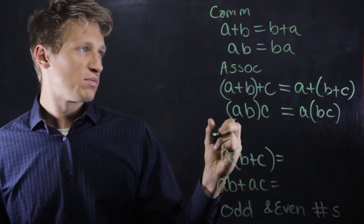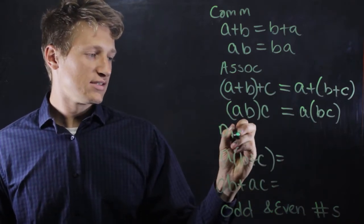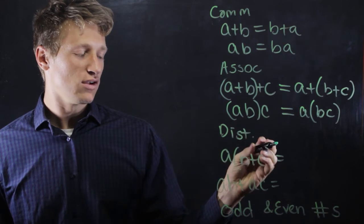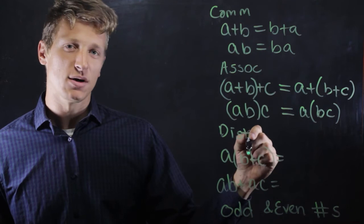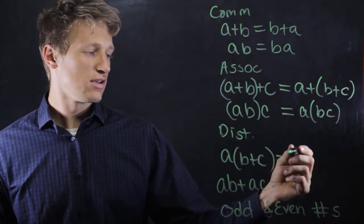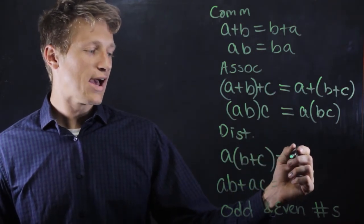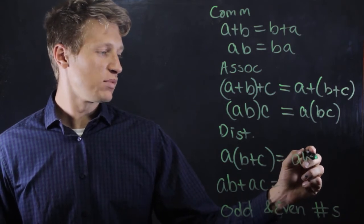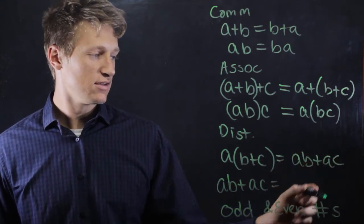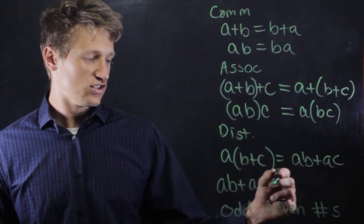The distributive property says that we'll get the same result if we multiply a times the sum of b plus c. We'll get the same result if we add the products. So if we add a times b plus a times c. And this is just the reverse of that.